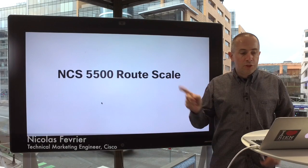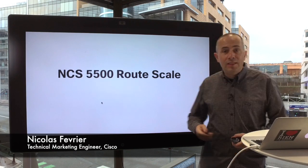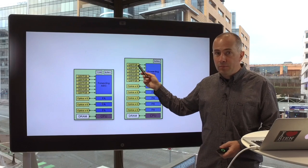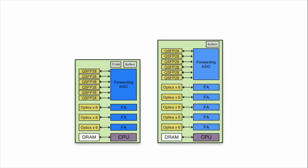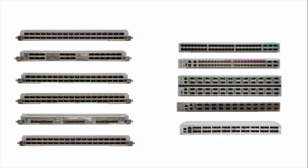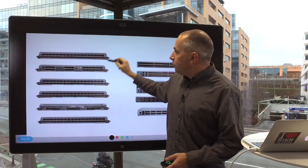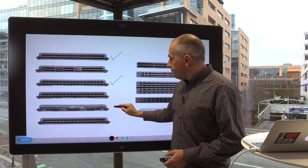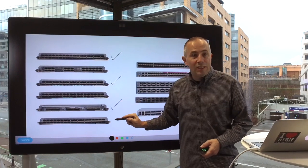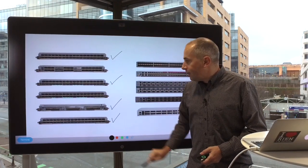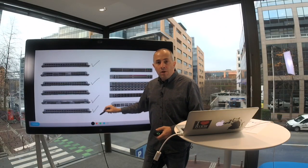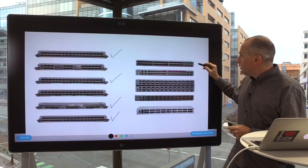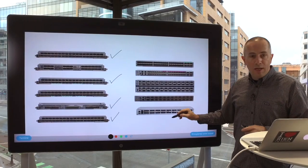In this video, we'll show you the routing scale of the NCS 5500, and more particularly we talk about the line card and system not using external TCAM. For instance, we are talking about the 36x100G line card, the 18H18F, the coherent DWDM line card, and the MACsec line card. None of them are using external TCAM, just the memory inside the forwarding ASIC.